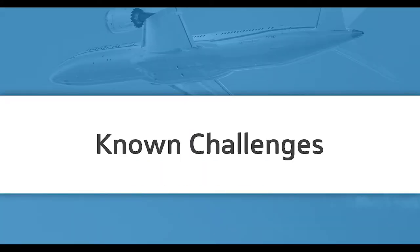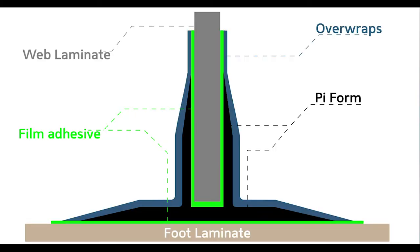The known challenges of the application: we have the web laminate with your adhesive film bonded to the overwraps and the PI form, and then the lamination to the foot laminate. So we have the inspection of the bond lines of the film adhesives across all sides of the PI joint form.